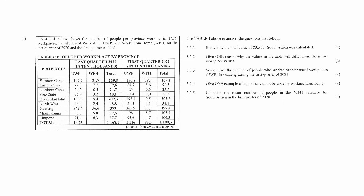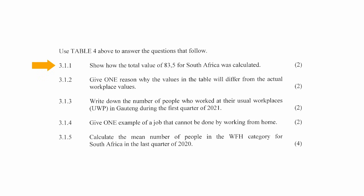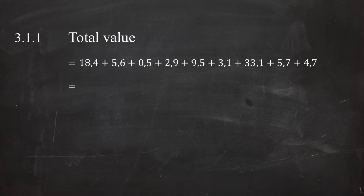Question 3.1 consists of 5 data handling questions designed to assess your understanding of data analysis. You are given a table showing the number of people per province working in two workplaces: usual workplace (UWP) and work from home (WFH), for the last quarter of 2020 and first quarter of 2021. In question 3.1.1, you have to show how the total value of 83.5 for South Africa was calculated. The total value of 83.5 for work from home in the first quarter of 2021 was calculated by finding the sum of all people from all provinces that worked from home.